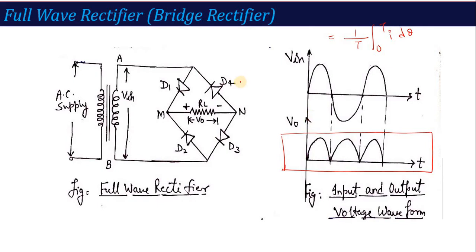In the full wave rectifier output, one complete cycle runs from 0 to π, and then it repeats. So the time period T is 0 to π, and the integration time period is also 0 to π. The value of i is Im sin θ.